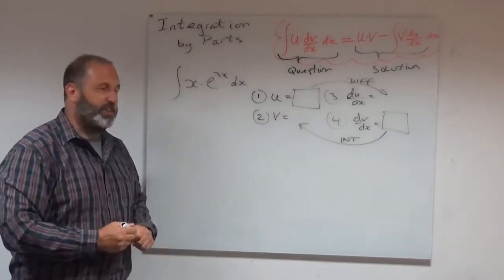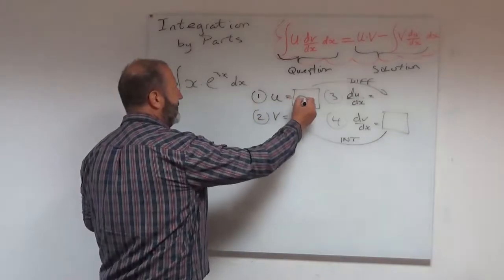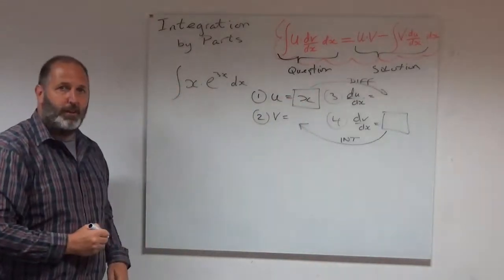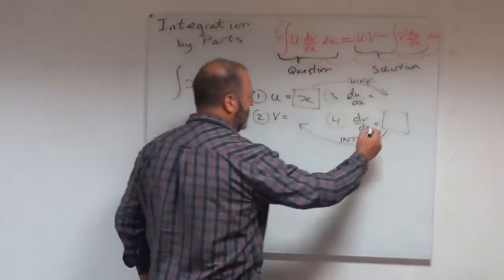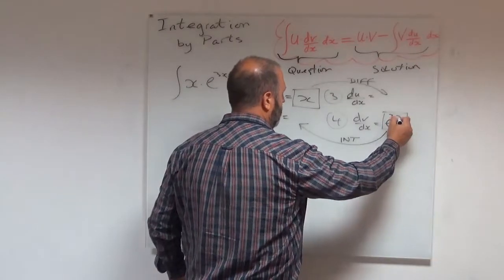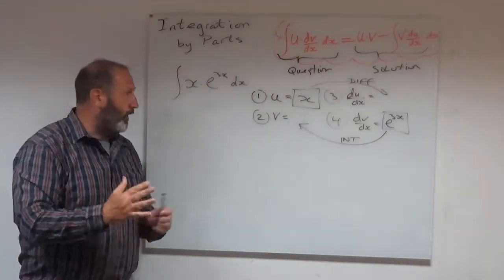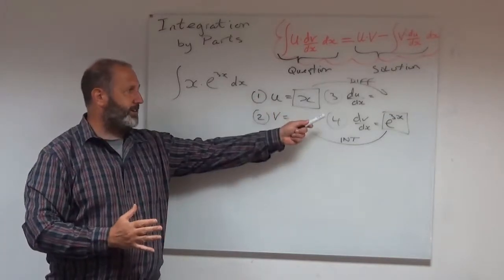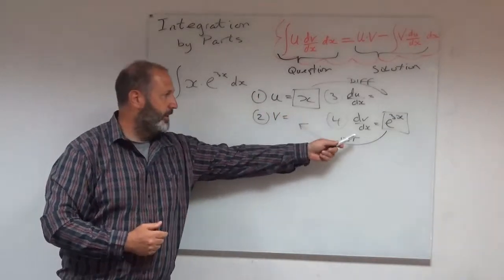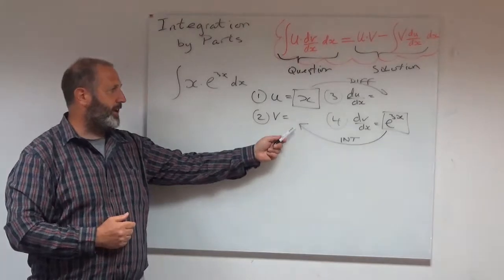But for now, what I want to do is I want to say my x goes in there. And my other term, e to the 3x, must therefore go there. And then off we go. I'm going to differentiate x to find du dx. I'm going to integrate e to the 3x to find v.